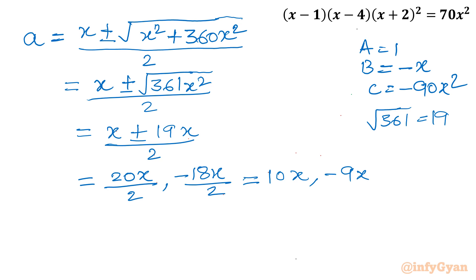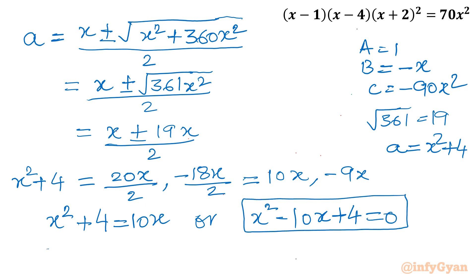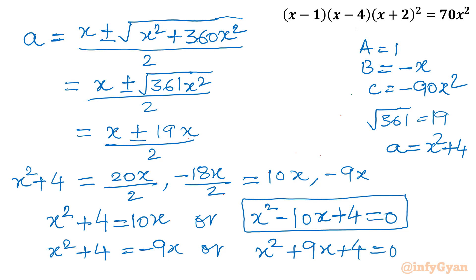Remembering that a = x² + 4, we now have two quadratic equations to solve. First: x² + 4 = 10x, which gives x² − 10x + 4 = 0. Second: x² + 4 = −9x, which gives x² + 9x + 4 = 0. So we have two quadratic equations and will find four solutions in total.